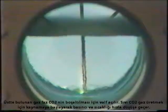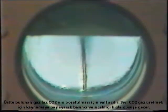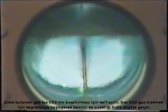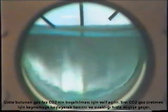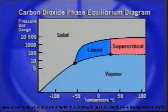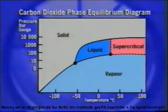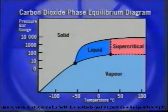The vent valve is now open to release CO2 vapour into the space above the liquid. The pressure, and therefore the temperature of the liquid CO2, falls rapidly as it boils to produce more vapour. As the pressure and temperature decrease, the conditions are represented by a different point on the liquid vapour equilibrium line, once again indicated by a cross.